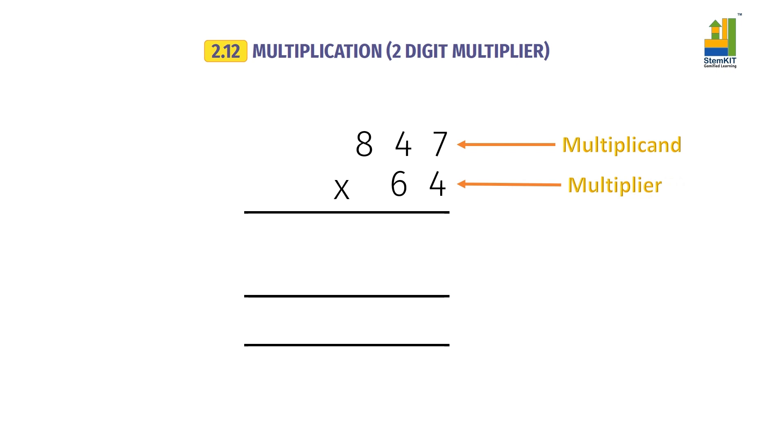When multiplying, we first multiply multiplicand by one's place value of the multiplier. Then we multiply multiplicand by the ten's row of the multiplier. Finally, we add the two rows to get the product.